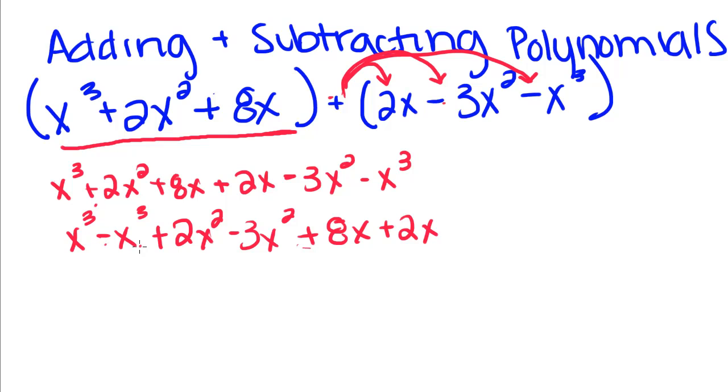So x cubed minus x cubed is 0, so those are going to go away. 2x squared minus 3x squared is going to give us a negative x squared, and 8x plus 2x is going to give us a positive 10x. So that's all you have to do. It's really just distribution and combining like terms. So we're going to do some examples now.